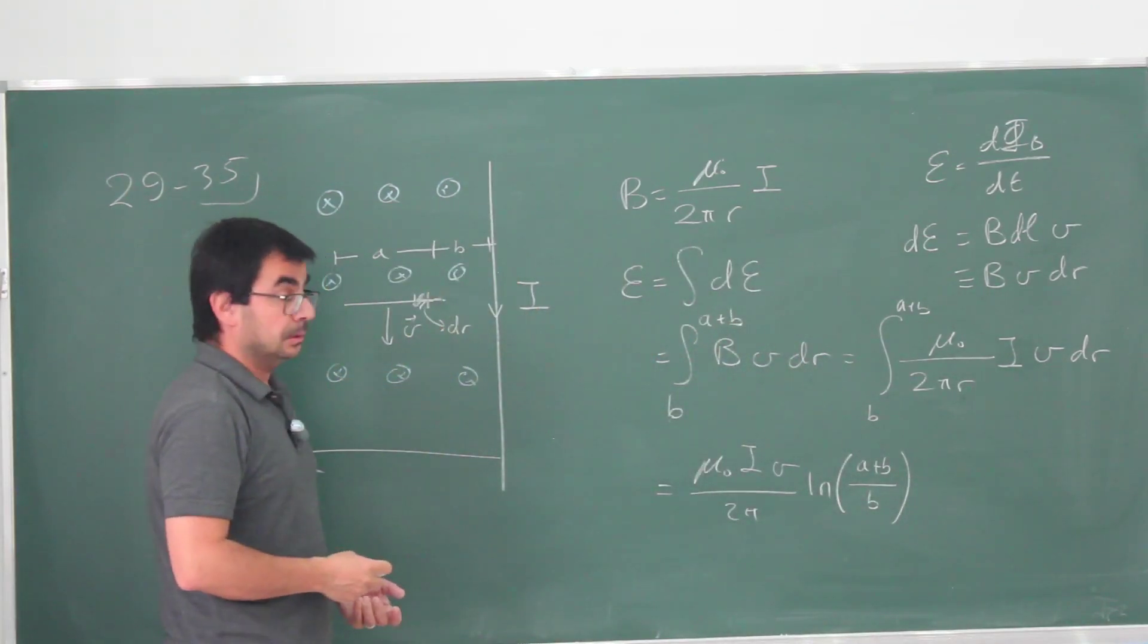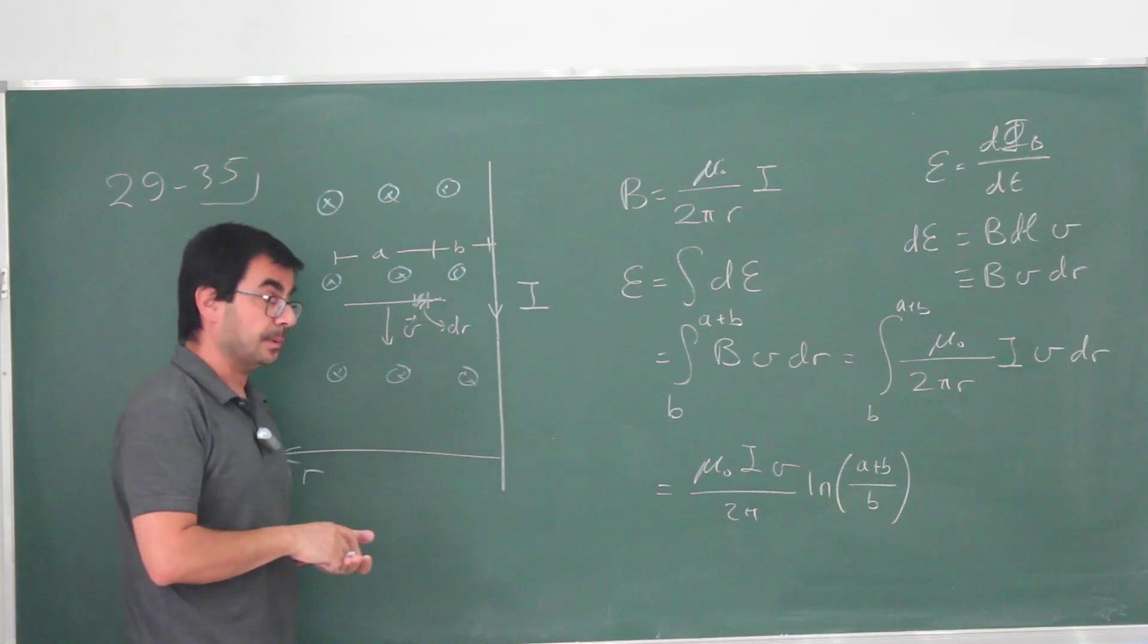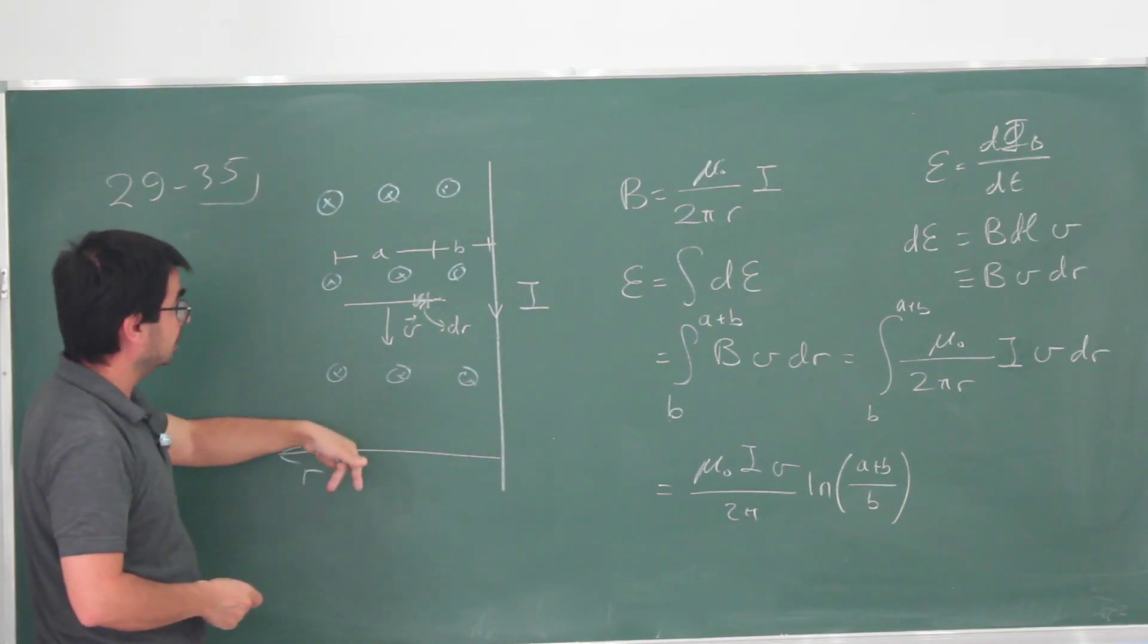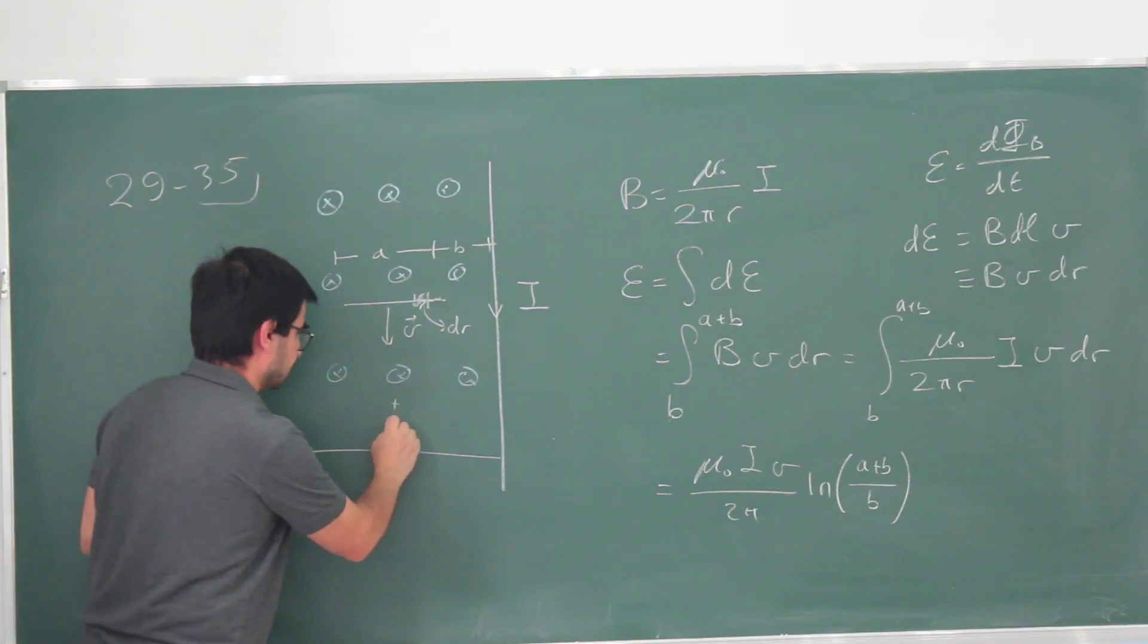What will be the direction of this EMF? Which part will be at a higher potential? You can do this perhaps formally by using cross products and so on. But there is an easy way to think about this. Just imagine that this is going down and see what happens to positive charges and negative charges.